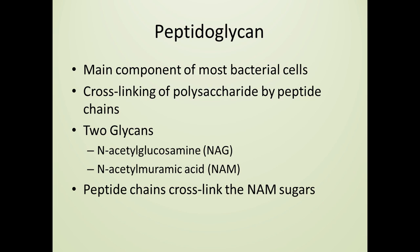The typical cell wall is composed of peptidoglycan, a complex polysaccharide composed of two sugars: N-acetylglucosamine, referred to as NAG, and N-acetylmuramic acid, referred to as NAM. The two sugars form polysaccharide chains, which will then be connected by amino acids.